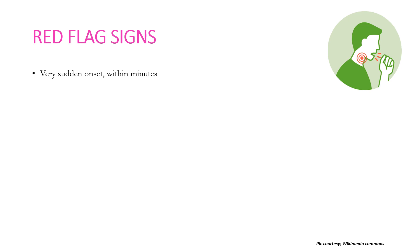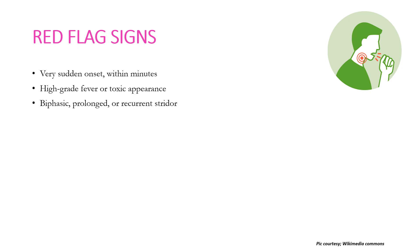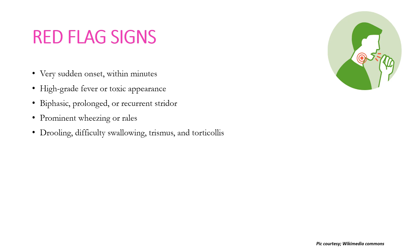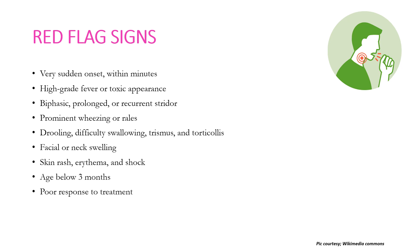Red flag signs that should prompt consideration of an alternative diagnosis include: sudden onset of cough within minutes (suggesting foreign body), high-grade fever or toxic appearance (suggesting bacterial infection like bacterial tracheitis), biphasic or recurrent stridor (as in radiolucent foreign body), prominent wheezing or rales (suggesting lower respiratory infection), drooling, difficulty swallowing, trismus, and torticollis (suggesting retropharyngeal abscess), facial or neck swelling (parapharyngeal abscess), skin rash with shock, age below 3 months, and poor response to treatment — as croup responds dramatically to steroids.